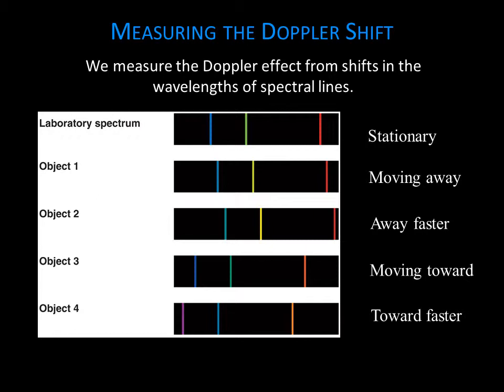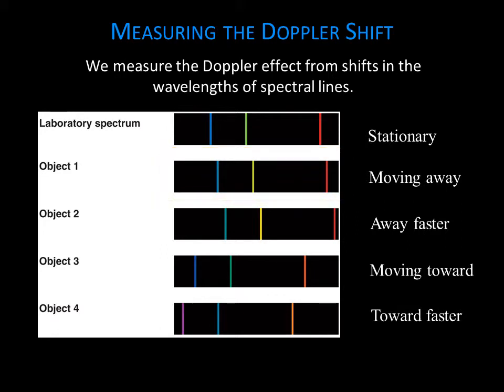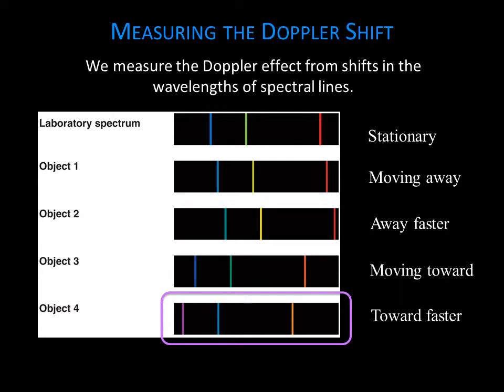Spectral lines provide the reference points we use to identify and measure Doppler shifts. For example, suppose we recognize the pattern of hydrogen lines in the spectrum of a distant galaxy. We know where the lines should appear if the galaxy is not moving, from looking at hydrogen in the laboratory. If the hydrogen lines appear at longer wavelengths, we know they are red shifted and the galaxy must be moving away from us. If the hydrogen lines appear at shorter wavelengths, they are blue shifted and the galaxy is moving toward us. In both cases, the larger the shift, the faster the galaxy is moving.